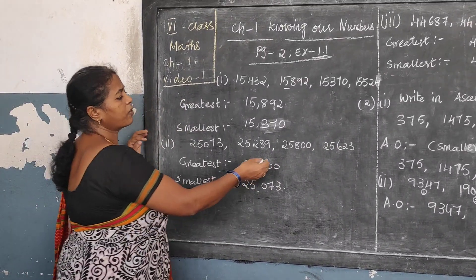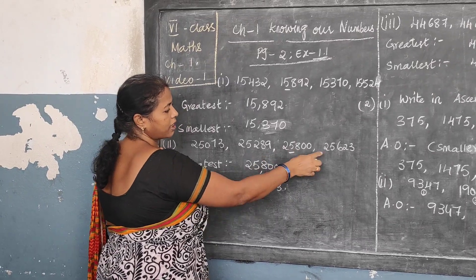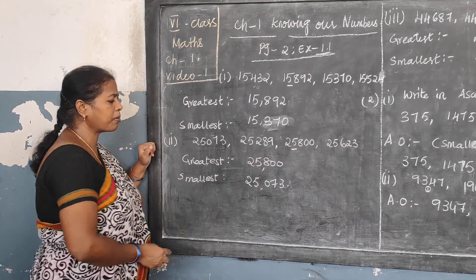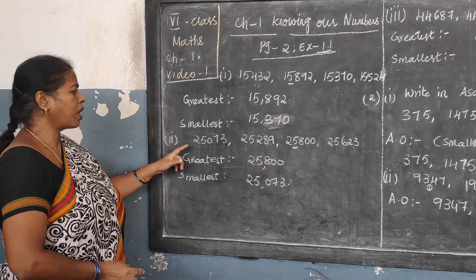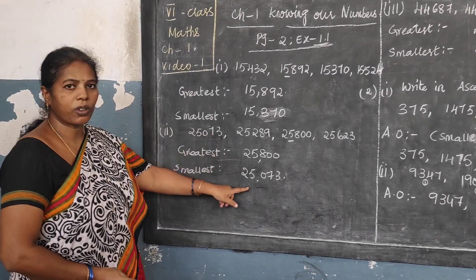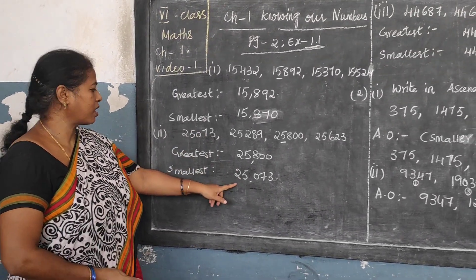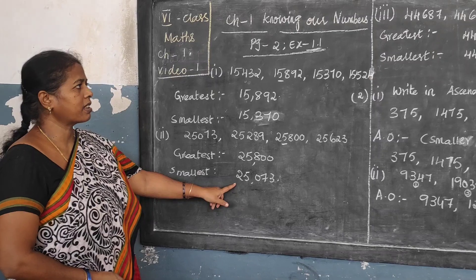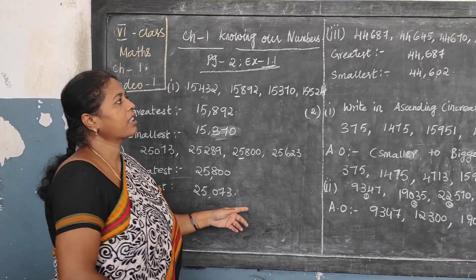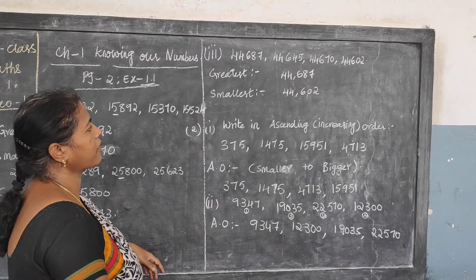Now you leave off this greater number. From the other three numbers you should check which is the smaller number. The smaller number will naturally be 25,073 — 25,000 and only 73. So 25,073 is the smallest number. Now the third question, same method, children.